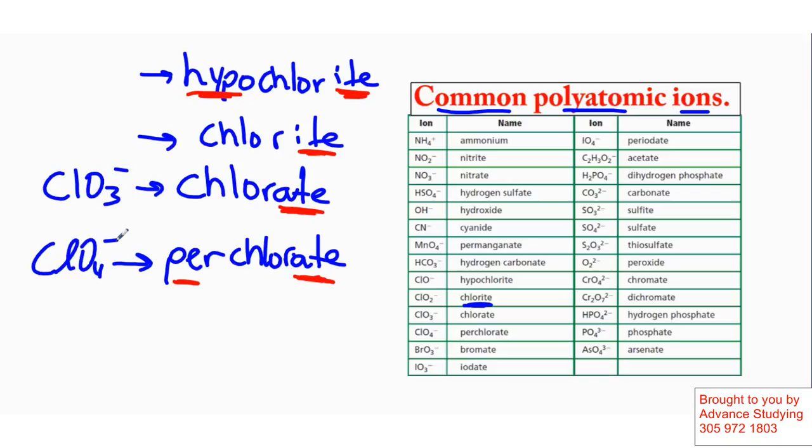At least these ones. And then I have the chlorite, ClO2. ClO2. Same charge. And the hypochlorite, which is the ClO1. We don't write the 1. Charge of negative 1.